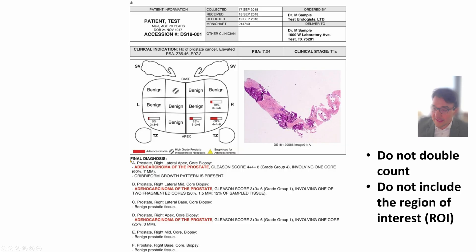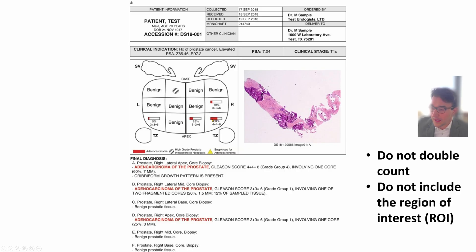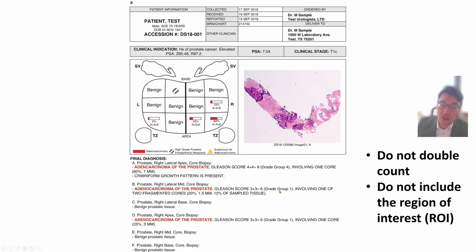At the bottom of the report, you'll see the final diagnosis. It lists the location of the biopsy. This one says adenocarcinoma, Gleason 4 plus 4 equals 8, grade group 4, involving 60% of the core — that's the right lateral apex. Another area, the right lateral mid, also has prostate adenocarcinoma: 3 plus 3 equals 6, which is grade group 1. Those two terms mean the same thing — they're just different ways of expressing the same result.